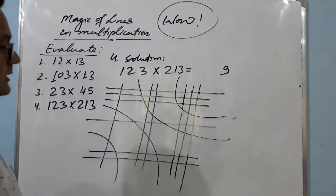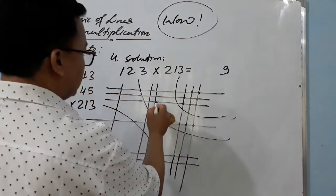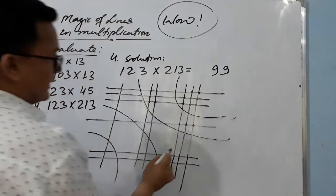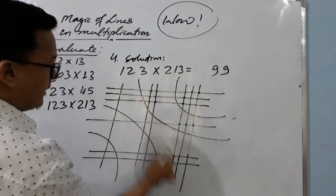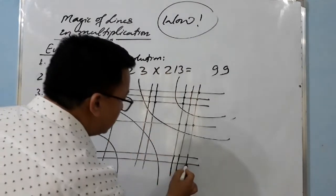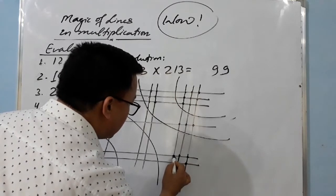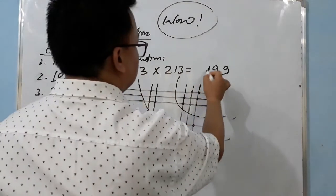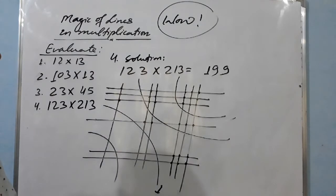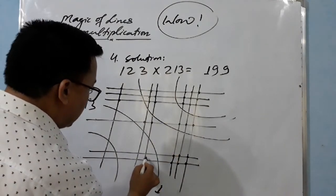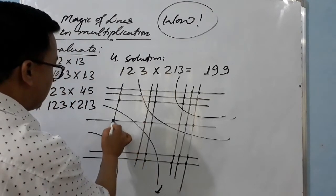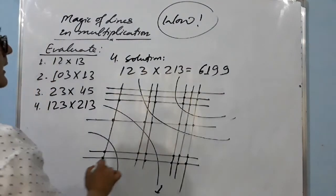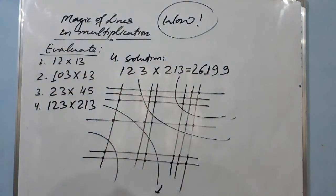Count the next diagonal section: one through nine — nine again. Then count the middle diagonal: one through eleven — eleven, so carry one. Now count this section: one, two, three, four, five — plus the carry one makes six.